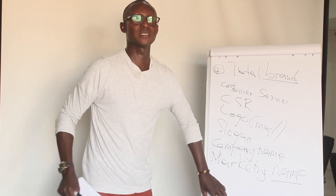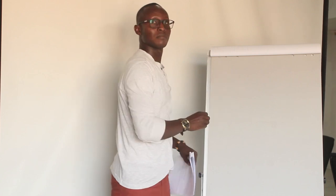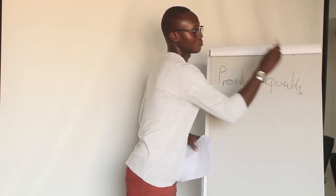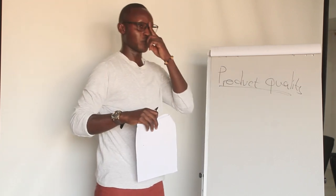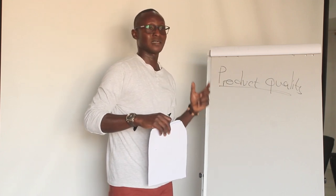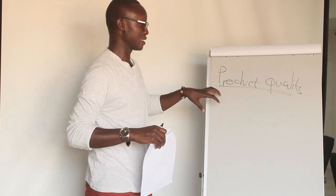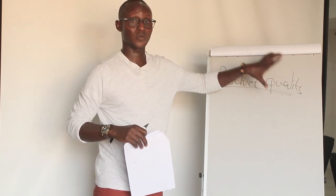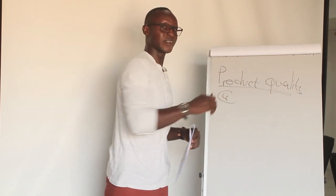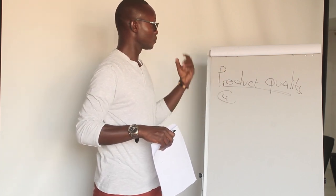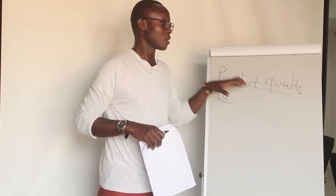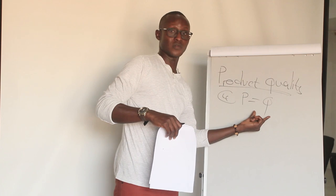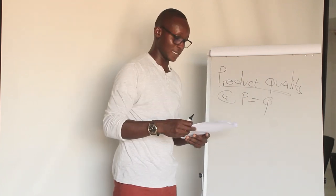The fifth point is product quality. Your product should be able to do the things you state it can do. If the product is claimed to last one year, it should last one year. If it is made up of five ingredients, the customer should be able to identify those elements in the product. The product price should be equal to the product quality, as this helps to draw and retain more customers.